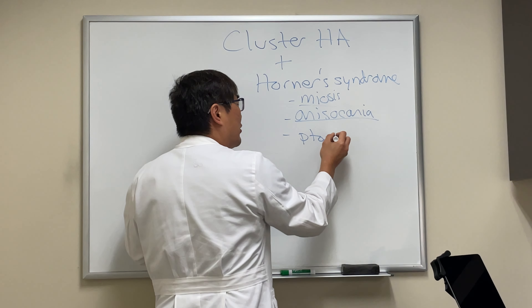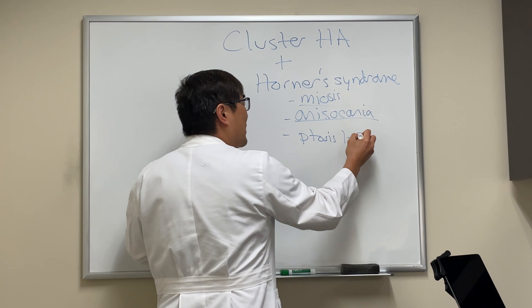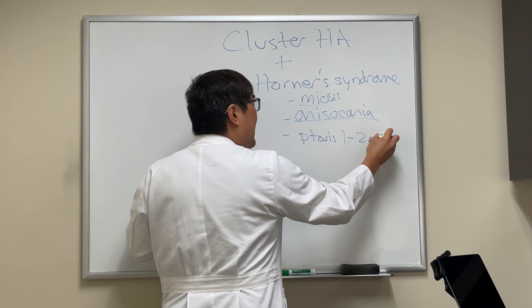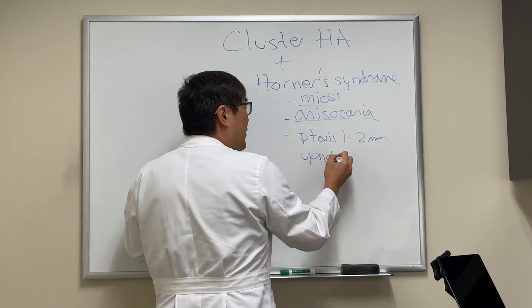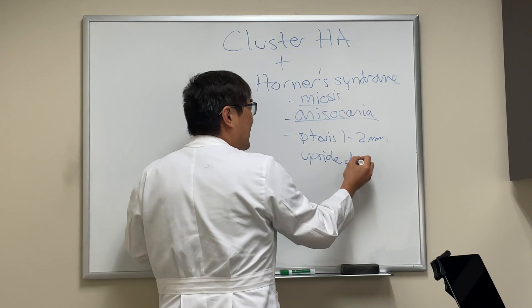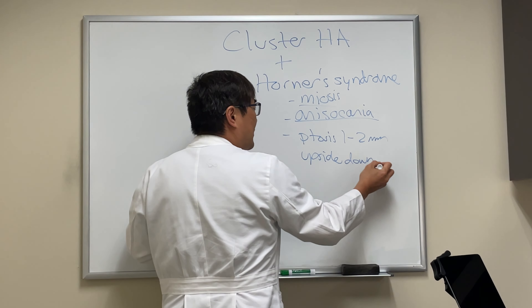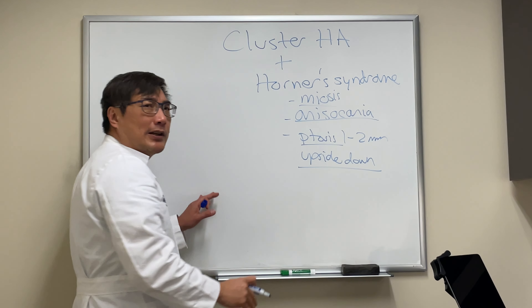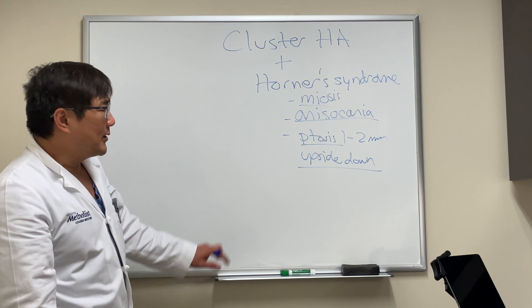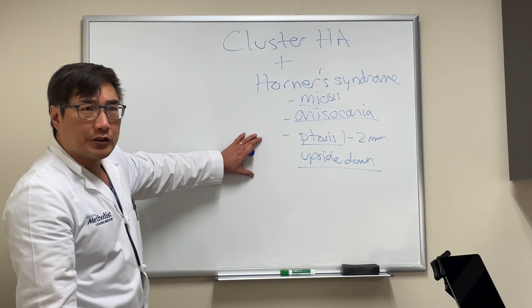There's going to be a ptosis, usually only one to two millimeters, and an upside-down ptosis from the sympathetically innervated muscle in the lower lid. The upper lid sympathetic muscle is Mueller's muscle.